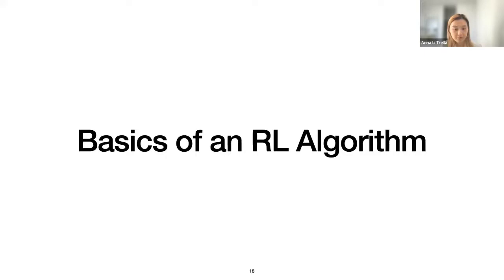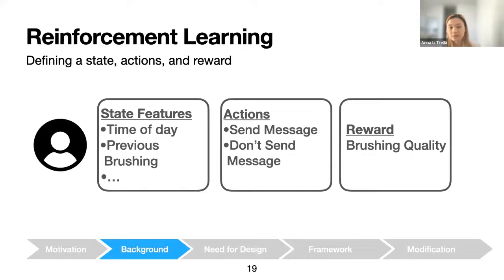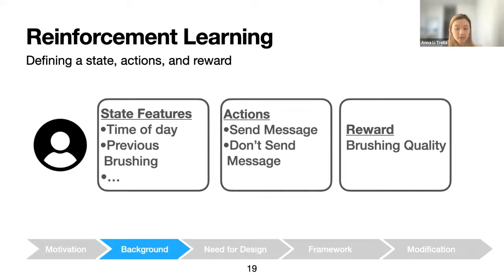Now I'll go through the basics of an RL algorithm. Each problem is uniquely defined by a state, action, and reward space. State features represent the user's current context. Actions are what the RL algorithm chooses from at decision time — in our case, either send a message or don't send a message. The reward gives feedback to the algorithm to indicate whether it chose an optimal action for the current context. The reward is typically chosen to be a proximal outcome, such as brushing quality, rather than a distal outcome like long-term dental health, in order to provide timely feedback.